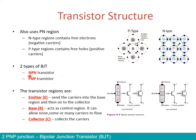NPN means you have two N regions with one P region in between. Whereas for PNP, you have one N region in between with two P regions around it. So the two configurations of P-N regions are either PNP or NPN.